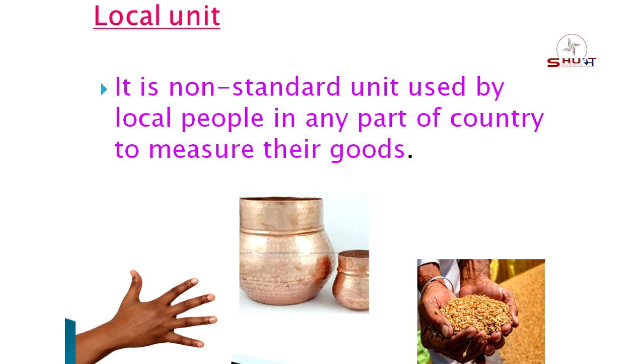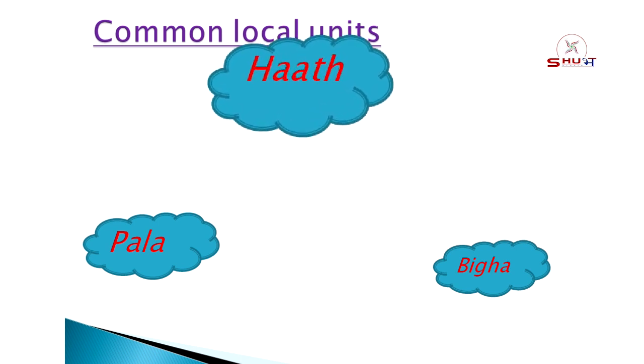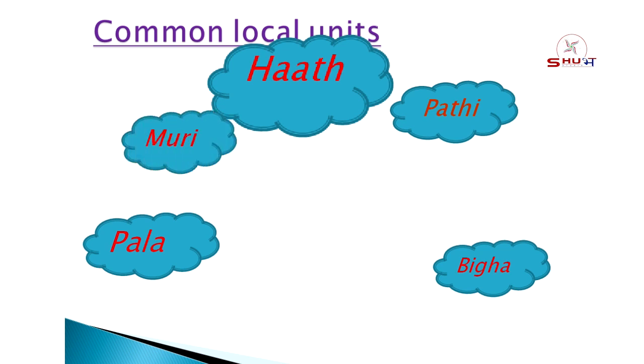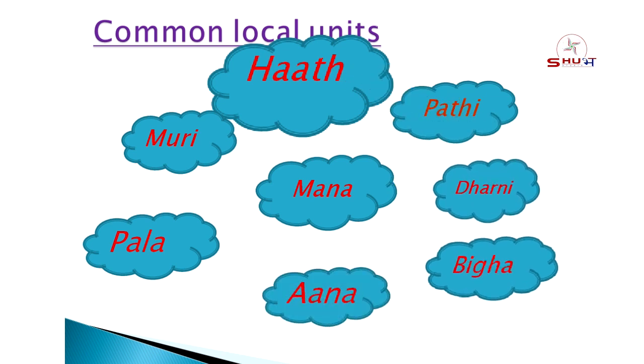Some of the other local units are like haat, pau, beca, met, bigha, dhur, mana. There's also pathi - moori, mana, and dharani. These are local units that everyone cannot understand internationally. If you are inside Nepal, that may be understood by almost all the people, but outside they do not understand such language. So these are called common local units.